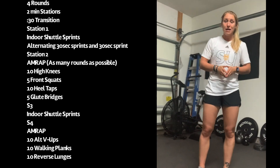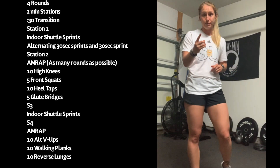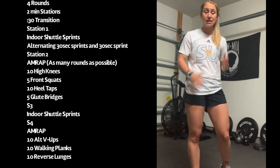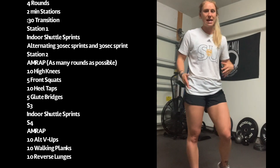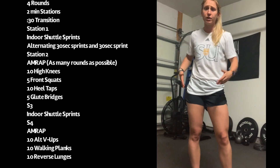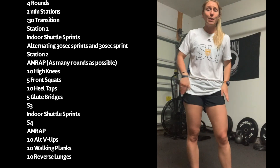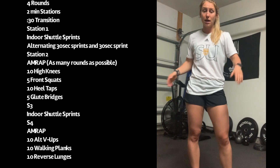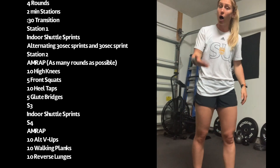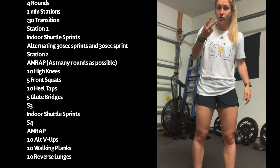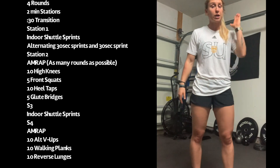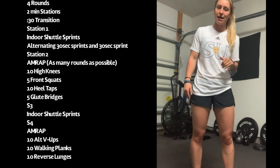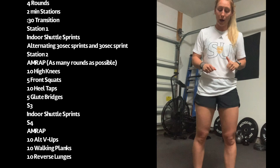Station number one, you are going to be doing 30 seconds of sprints. They can be short sprints, they can be across your living room and back, but you are sprinting for 30 seconds — short shuttle sprints. You are then jogging for 30 seconds. We have two more sets of that to get to two minutes. You're going to sprint another 30 seconds and then jog 30 seconds. That is station number one.